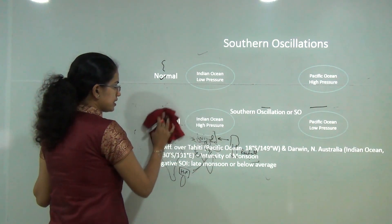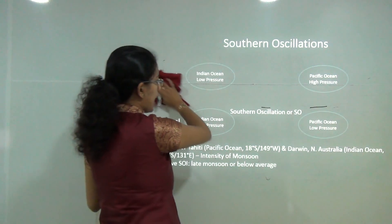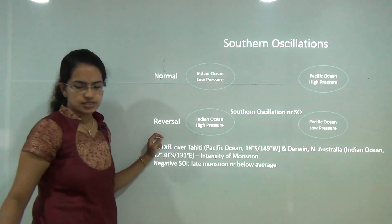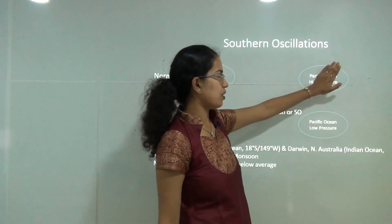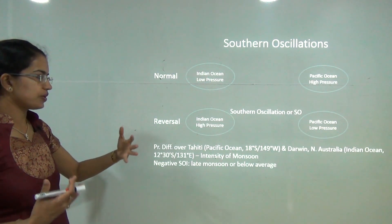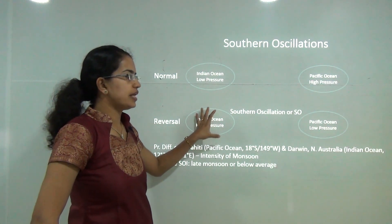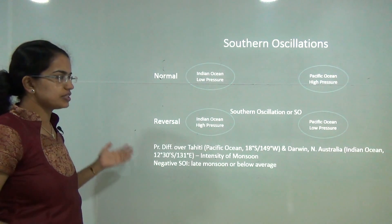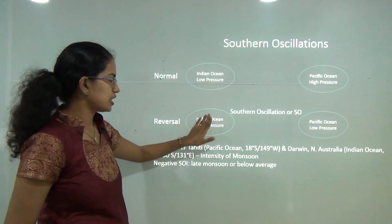Another phenomenon affecting the monsoon is the Southern Oscillation and the El Niño or La Niña effect. Normally, the Pacific Ocean is at high pressure compared to the Indian Ocean. However, every 2 to a few years there is a phase of reversal where high pressure builds up in the Indian Ocean relative to the Pacific. This is the Southern Oscillation — the pressure difference measurable between Tahiti in the Pacific and Darwin, Australia.